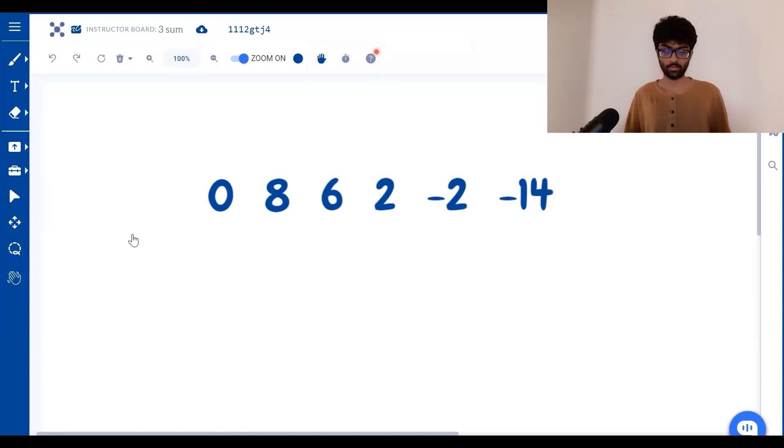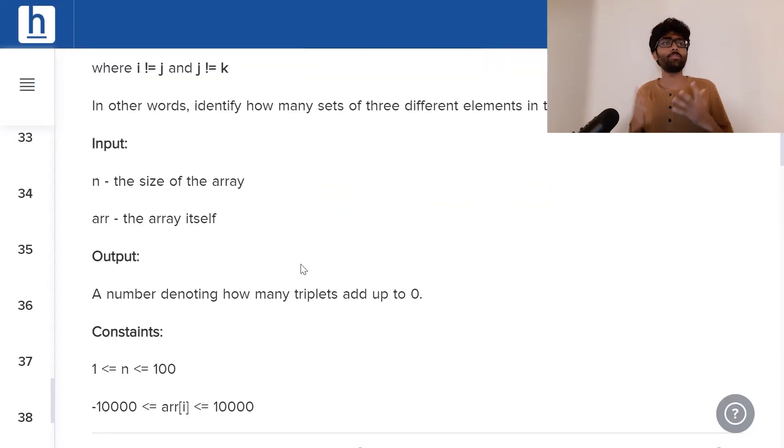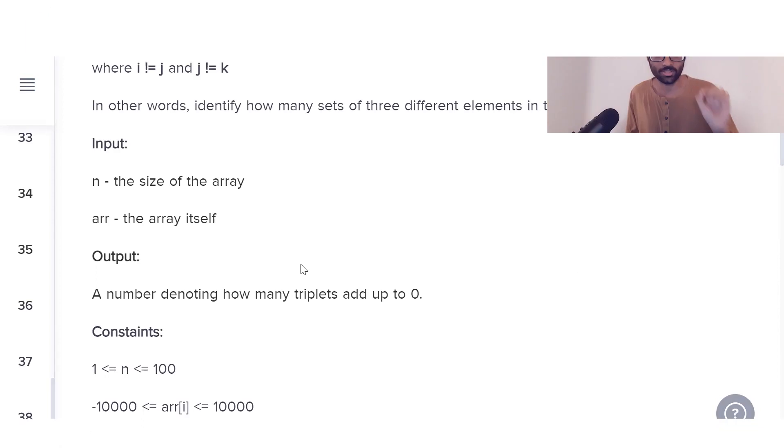Say this is an array right here. 086, 2 minus 2 minus 14. What 3 numbers add up to 0? 0, 2 and minus 2. If you add the 3 of them, you get 0. Similarly, 8 plus 6 gives us 14. That plus minus 14 gives us 0. So there are 2 triplets which add up to 0 which is why our answer is 2. Now you know what to do guys. Link in the description down below. Make sure to click it and try to solve it for yourselves.